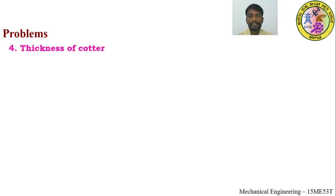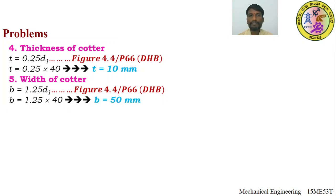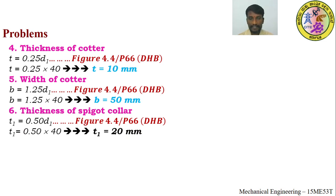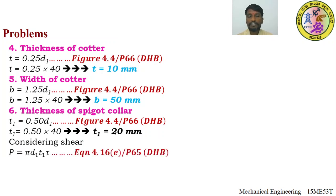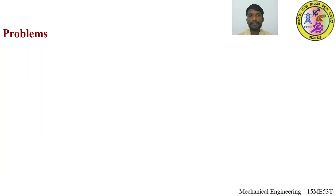Point 4 — Thickness of cotter: From figure 4.4 (page 66), t = 0.25 × d1 = 10 mm. Point 5 — Width of cotter: b = 1.25 × d1 = 50 mm. Point 6 — Thickness of spigot collar t1: From figure 4.4, t1 = 0.5 × d1 = 20 mm. Considering shearing (equation 4.16e, page 65), t1 = 6.82 mm. Taking the maximum, t1 = 20 mm is adopted.